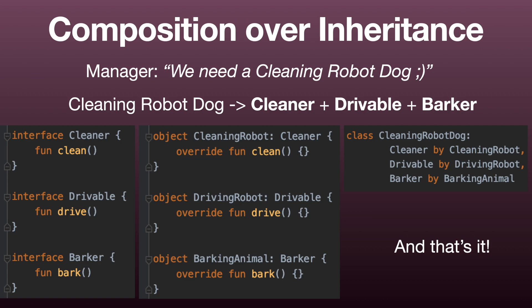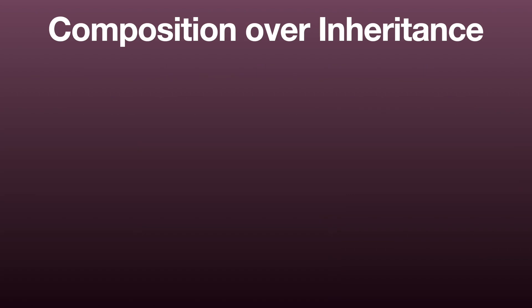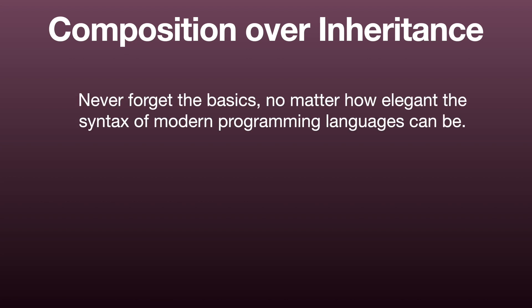To recap: favor composition over inheritance whenever there is no specific reason to go for inheritance — this keeps your classes more flexible and modifiable. Use composition leveraging the 'by' keyword of Kotlin for minimum boilerplate code. But please do not lose track of the basics: composition is simply referencing other instances of objects. Keywords and automations in modern programming languages are nothing more than conveniences and not a reason not to understand what happens behind the scenes. Thank you very much for watching and I'll see you in the next episode.